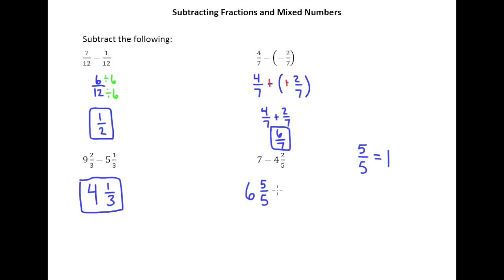So 7 becomes 6 and 5/5. Now what we can do is take 6 minus 4 which is 2, and then 5/5 minus 2/5 is 3/5.